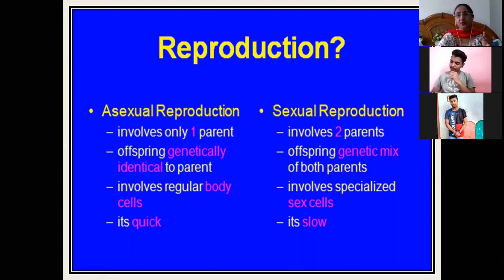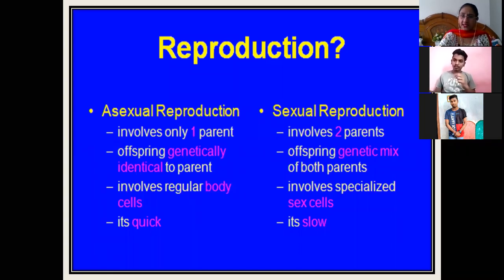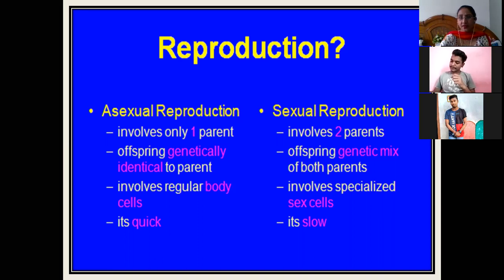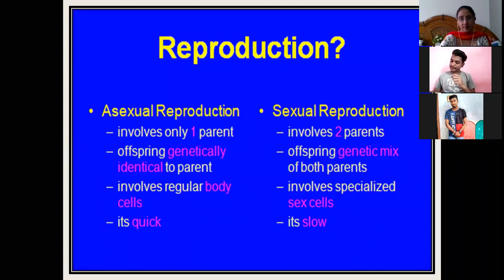The offspring or progeny produced in asexual reproduction will be genetically similar to that of the parent. Whereas in sexual reproduction, offspring are a genetic mix of both parents. There is a fusion of the female egg and the male sperm. So it involves a genetic mix, and there is a lot of genetic variation found in the progeny in the case of sexual reproduction.